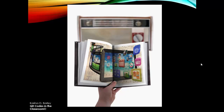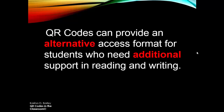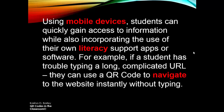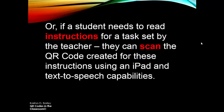This opens up the whole technological world for the classroom and for the student. QR codes can provide an alternate access format for students who need additional support in reading and writing — they're particularly good for kids who have learning issues. Using a mobile device, students can quickly gain access to information while also incorporating their own literacy support apps or software. For example, if a student has trouble typing a long complicated URL they can use the QR code to navigate to that website instantly, or they can scan a QR code for task instructions using an iPad with text-to-speech capabilities.